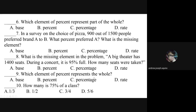Number nine: which element of percent represents the whole? Letter A: base. Letter B: percent. Letter C: percentage. Letter D: rate. Number ten: how many is 75 percent of a class? Is it letter A: one-third. Letter B: one-half. Letter C: three-fourths. Letter D: five-sixths.